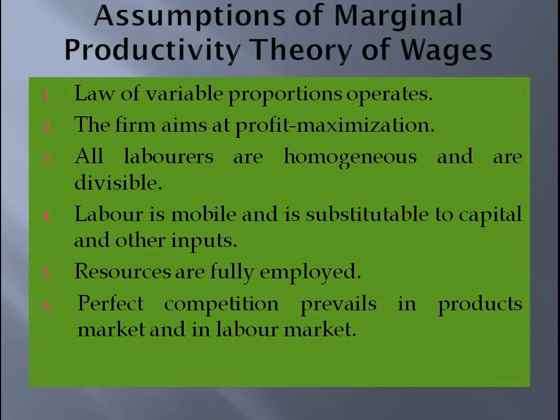The sixth assumption is that perfect competition prevails in both the product market and the labor market. In perfect competition, homogeneous products are produced, everyone has full information, and there are no barriers to entry and exit. These conditions apply in both the product market where goods are bought and sold, and in the labor market where laborers are employed.